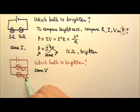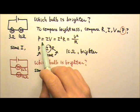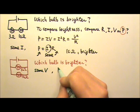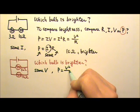And we know the resistance, that means which equation is convenient for us? It's the power equals to V squared over R.